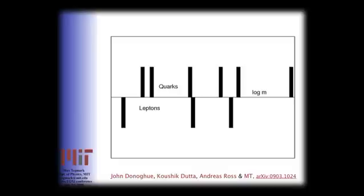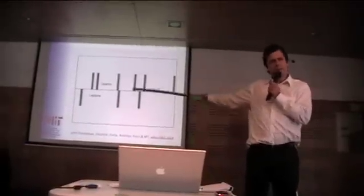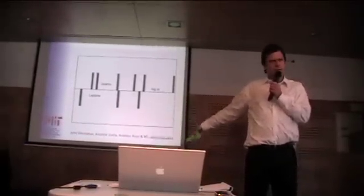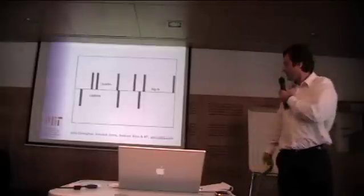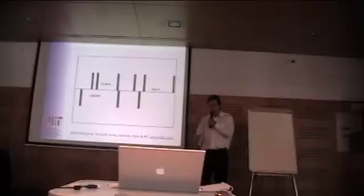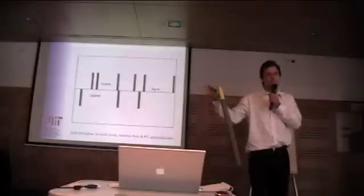Let's look, for example, at the fermion masses here. The bare quark masses and the lepton masses, the electron, the muon and the tau, on the log scale, they look pretty evenly spaced out on a log scale. They don't look very evenly spaced out on a linear scale. So together with my co-conspirators here, John Donoghue, Kaushik Gutt and Andrea Ross, what we did was we tested the hypothesis that these were drawn from various probability distributions.